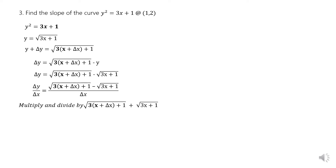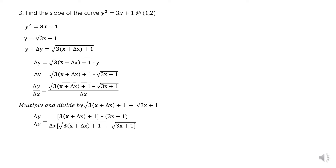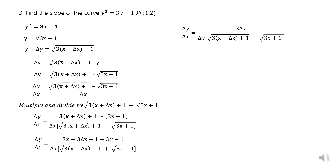Multiply and divide by the conjugate of the numerator, changing the sign from negative to positive. Multiplying both numerator and denominator by the conjugate gives: [3(x + Δx) + 1 − (3x + 1)] divided by Δx times the conjugate. Simplifying the numerator: 3x + 3·Δx + 1 − 3x − 1. Combining similar terms, the numerator becomes 3·Δx. So Δy/Δx = 3·Δx / [Δx · (√(3(x+Δx)+1) + √(3x+1))]. Δx cancels, and the numerator becomes 3.